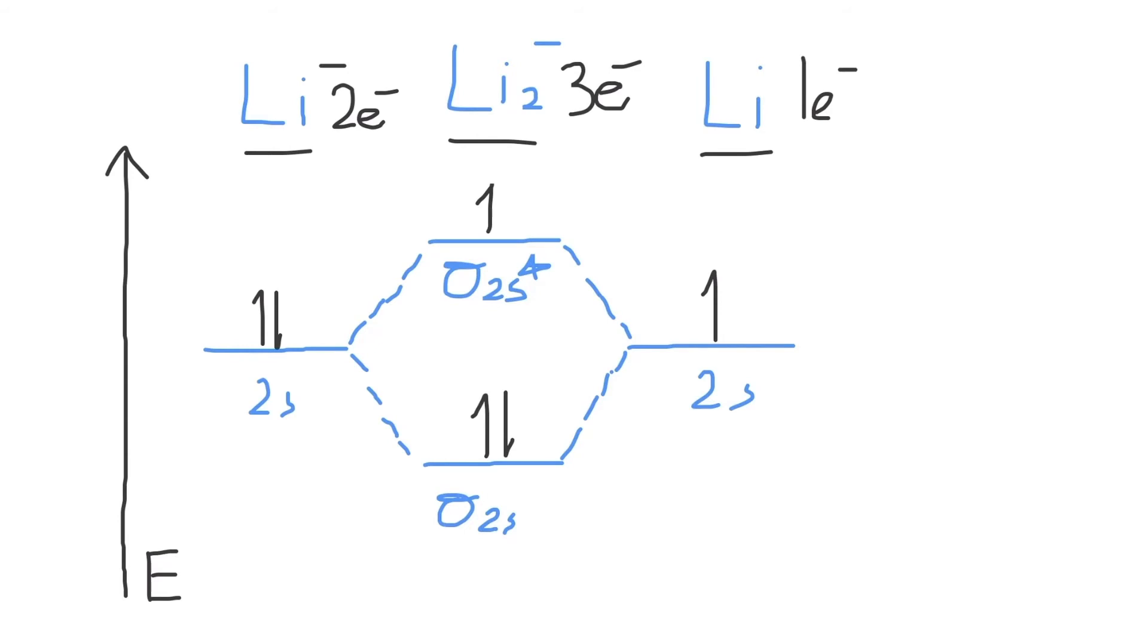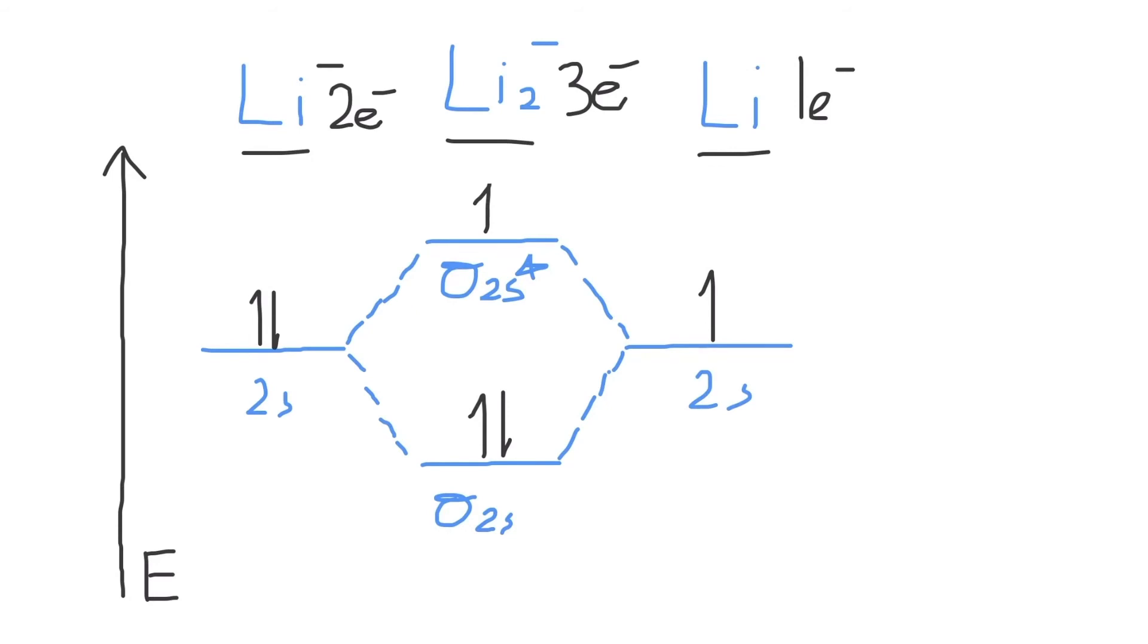And this is your completed molecular orbital diagram for Li2 minus. Next, what is the bond order for Li2 minus? The bond order measures the strength and stability of the bond, and also tells you how many electron pairs are present in a bond.